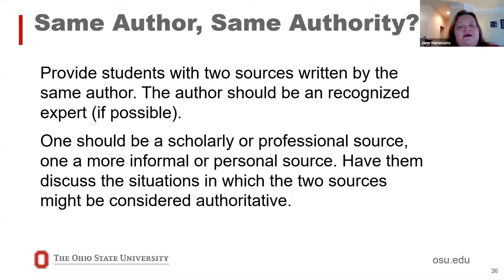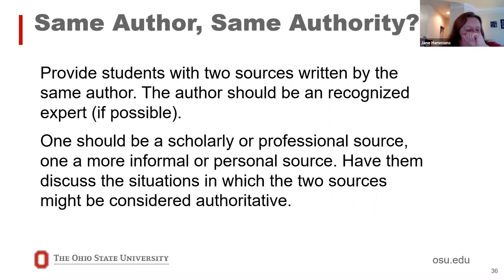Another potential activity: give students two sources written by the same person — one a more popular source like a blog post and one a peer-reviewed scholarly research article — and have them discuss when it might be appropriate to use one or the other. In this case the authority of the author is the same, so they have to think about what other factors might give that source authority or not, besides the author themselves.